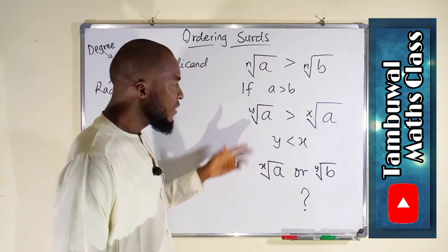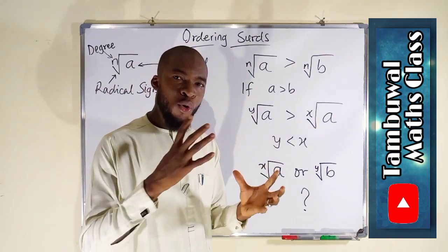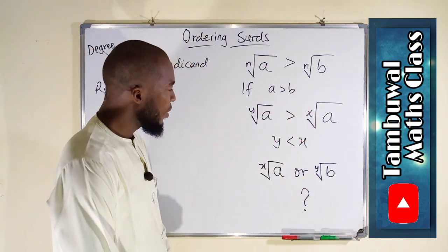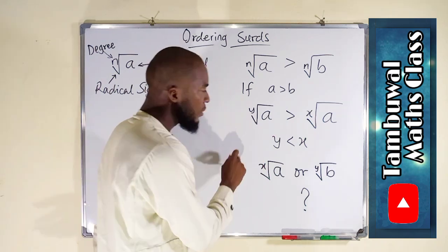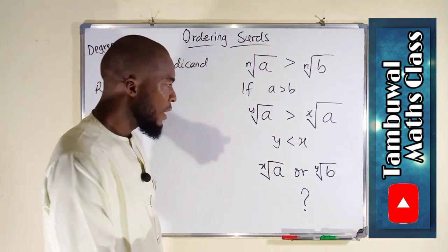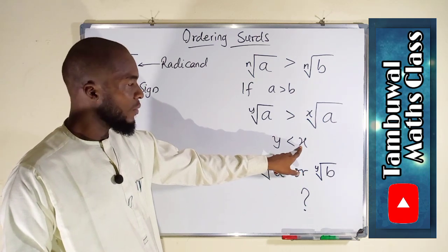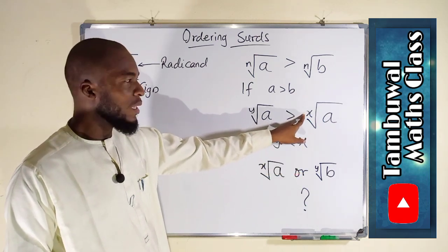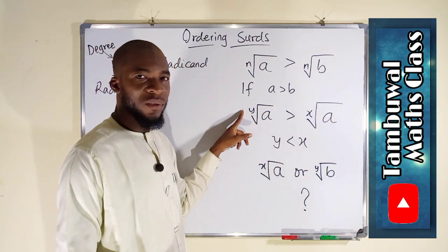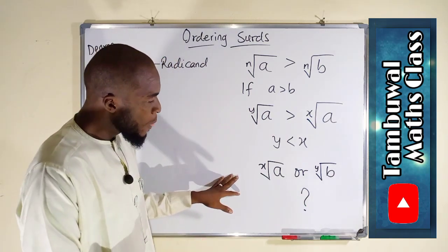The second condition is when the radicands are exactly the same. If two or more surds have the same radicands, you need to consider their degrees. The y-th root of a is greater than the x-th root of a only if y is less than x, because the greater x becomes the less the value, and the less y becomes the greater the value.